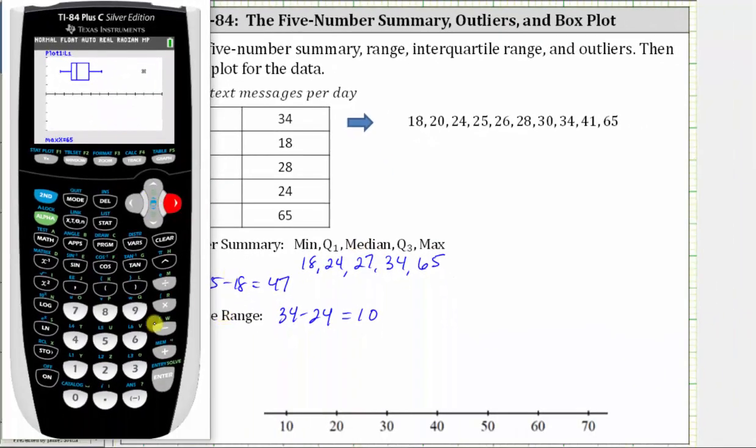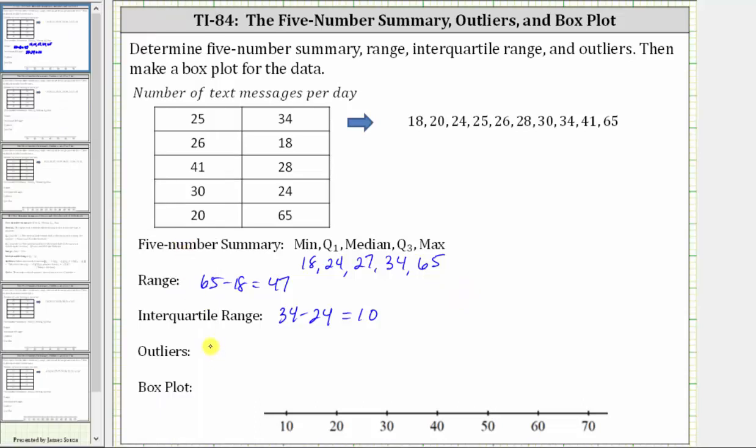So let's go ahead and record the outlier and create our box plot. So again, the outlier is 65. And now we create the box plot. Let's first plot the median of 27, which is approximately here. Then we'll plot Q1 and Q3. Q1 is 24. Q3 is 34.